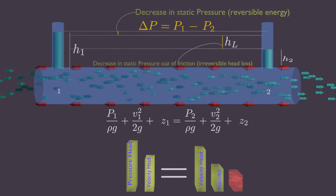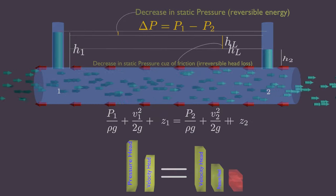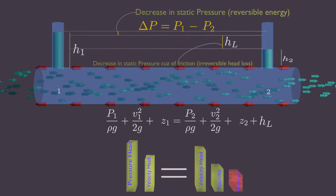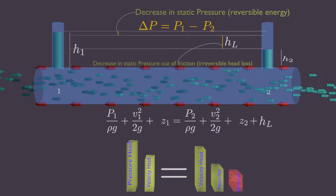As you can see, head loss affects the energy balance. This loss is permanent and not conserved. It's lost to the surrounding.